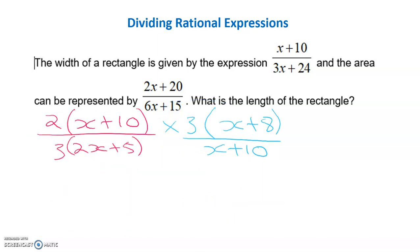Now we need to simplify by canceling out common terms that are in the numerator and the denominator, like this 3. One exists at the top and one down the bottom, so we can cancel, as well as the x plus 10. So we're left with a 2 and an x plus 8 up the top and 2x plus 5 down the bottom.